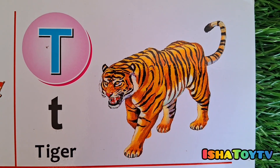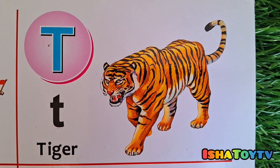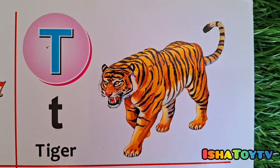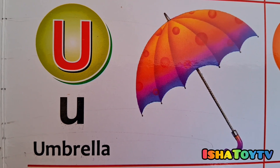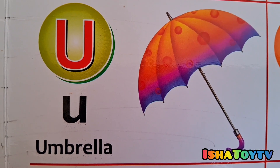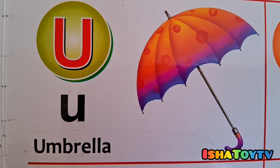S for Ship. T for Tiger. U for Umbrella.